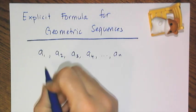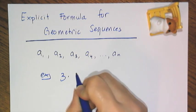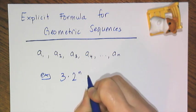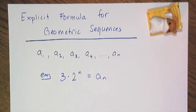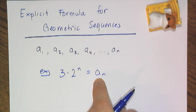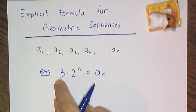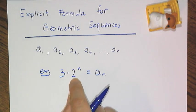Let me show you an example of one. So 3 times 2 to the nth power equals a sub n is an example of an explicit formula. It tells you that the term a sub n can be created by taking 3 and multiplying it by 2 to the nth power.